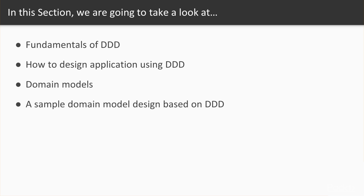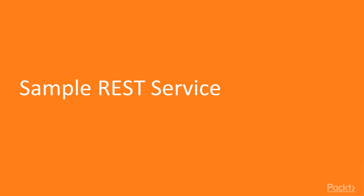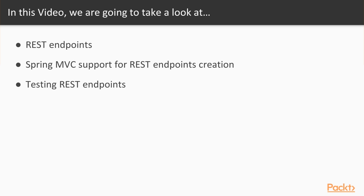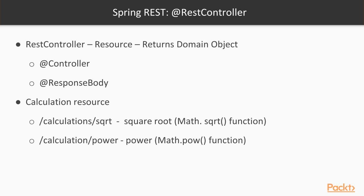As part of a sample REST service, we'll implement a REST service which is a calculation resource. This calculation resource will have two endpoints: power and square root. We'll create a Spring REST service and also do manual testing of the REST endpoints using the Postman client. Before we jump in, we need to walk through some of the concepts and annotations we are going to use.